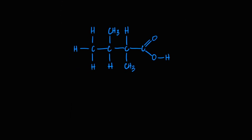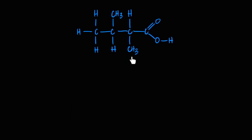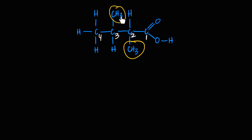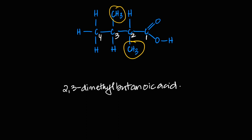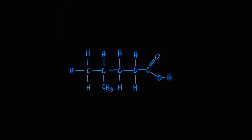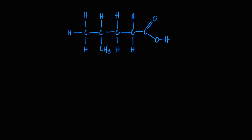For a more complex example: this is a carboxylic acid with a four-carbon parent chain. Carbon one is the carboxylic acid carbon. There are two methyl substituents — one on carbon two and one on carbon three. So the name is 2,3-dimethylbutanoic acid.